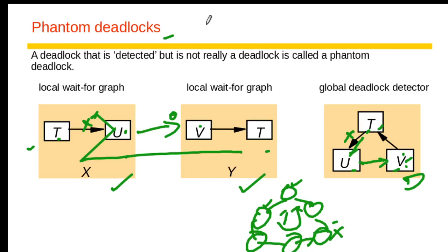Under the two-phase locking protocol, once a transaction starts releasing resources it cannot acquire new ones — it can release resources only on commit or abort. But a waiting transaction cannot commit since it must first get the needed resource, perform its operations, and then commit. Therefore, phantom deadlocks only arise if some transaction aborts for an independent reason, releasing its held resources unexpectedly during detection.